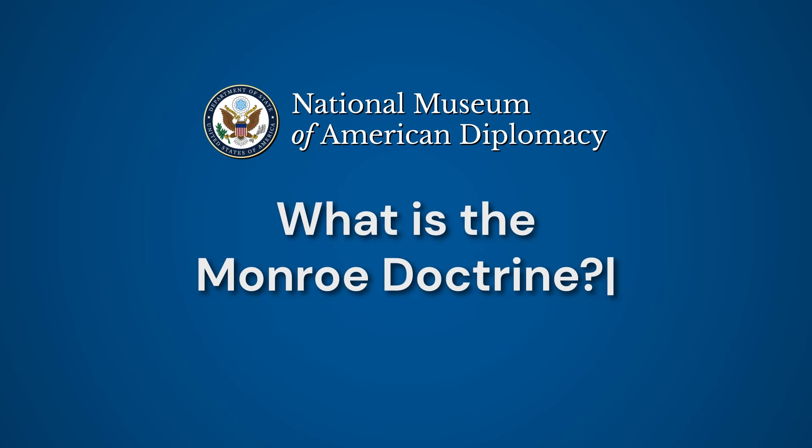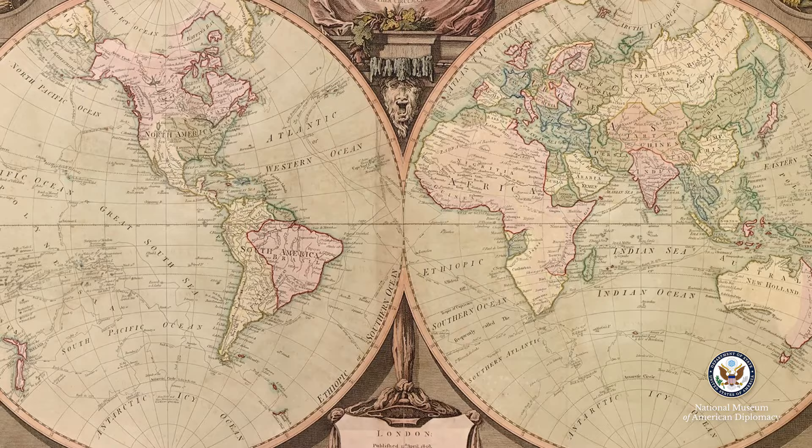The Monroe Doctrine is an early cornerstone of U.S. foreign policy. It is steeped in ideas of dismantling colonialism and shifting global power dynamics in the 19th century. Its origins are simultaneously simple and complex.